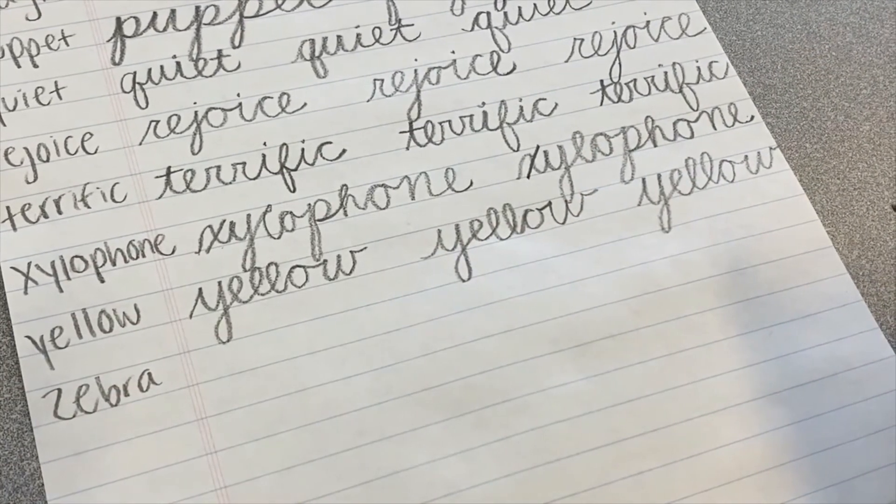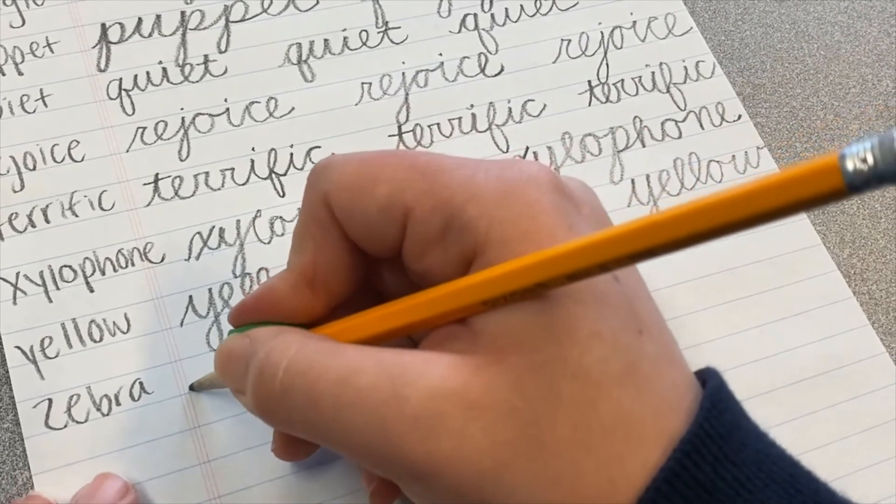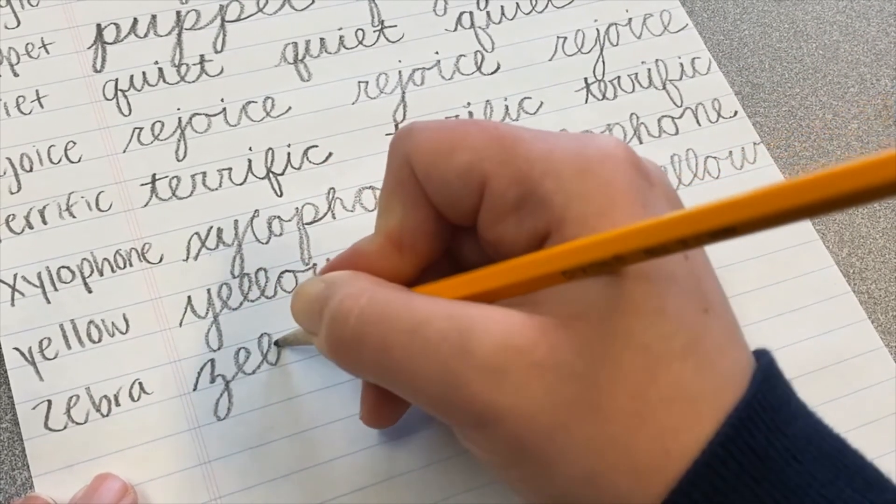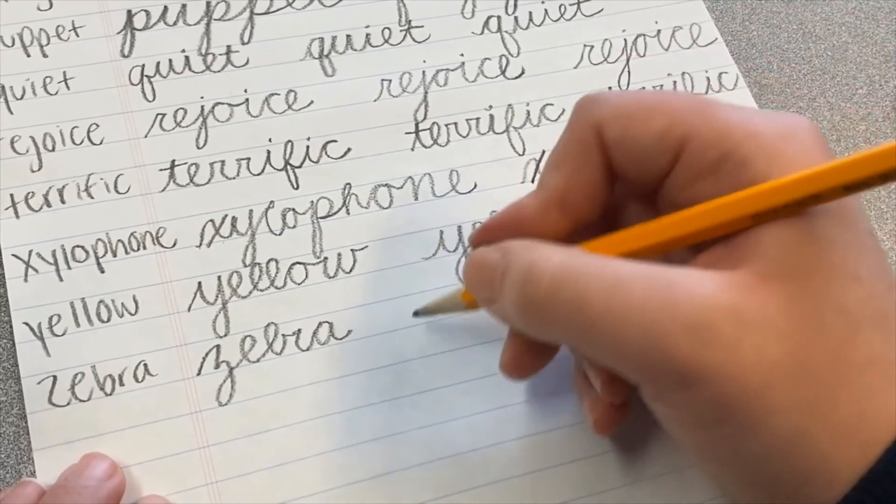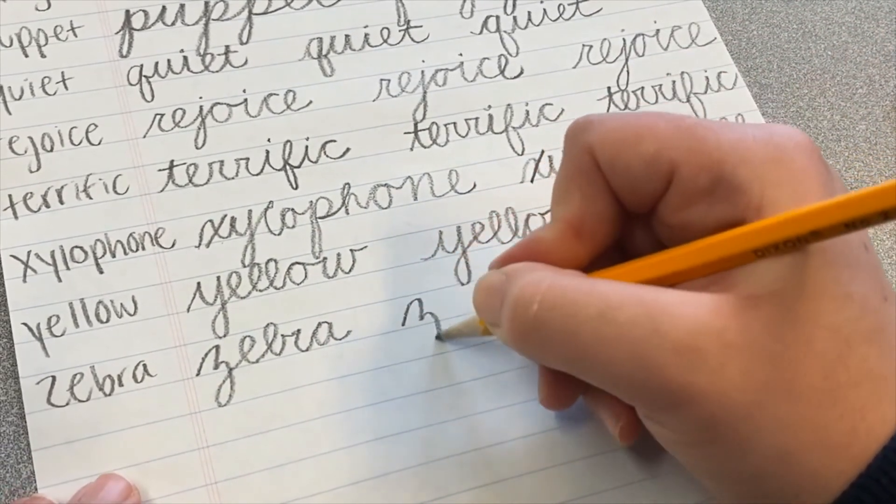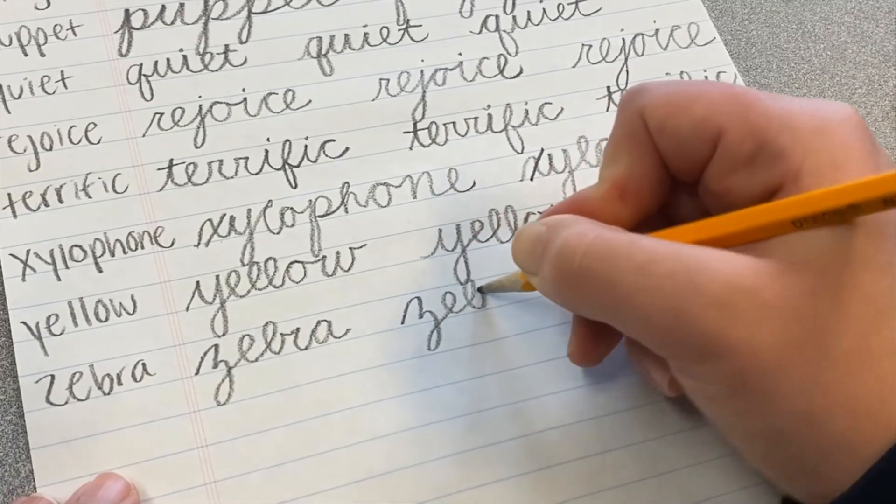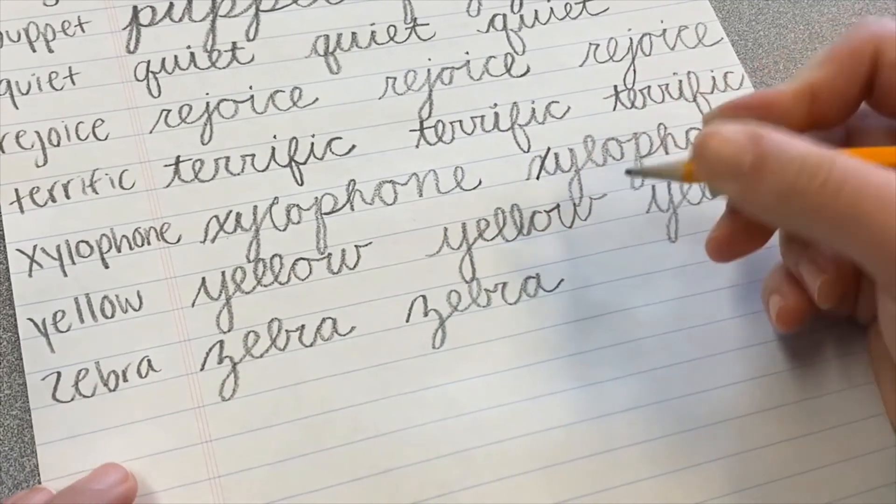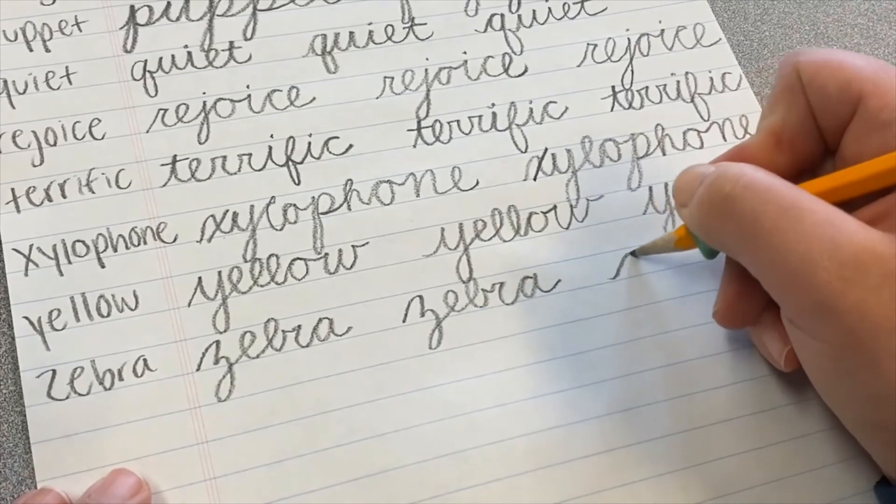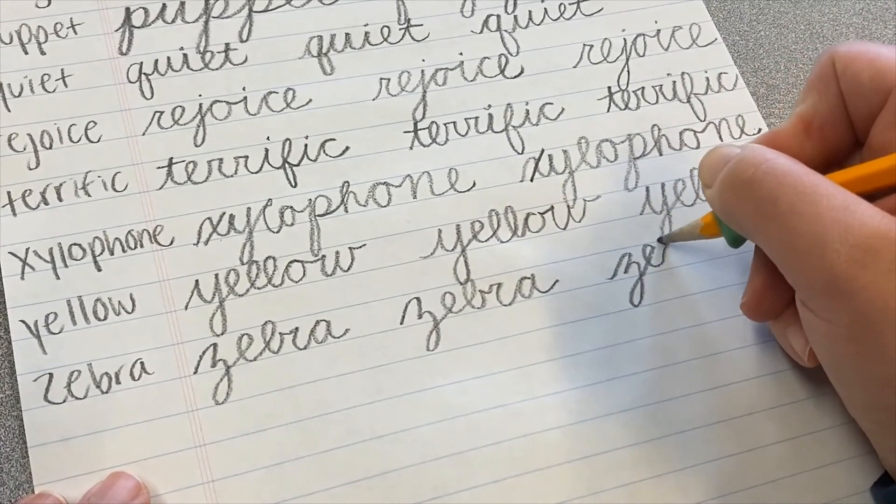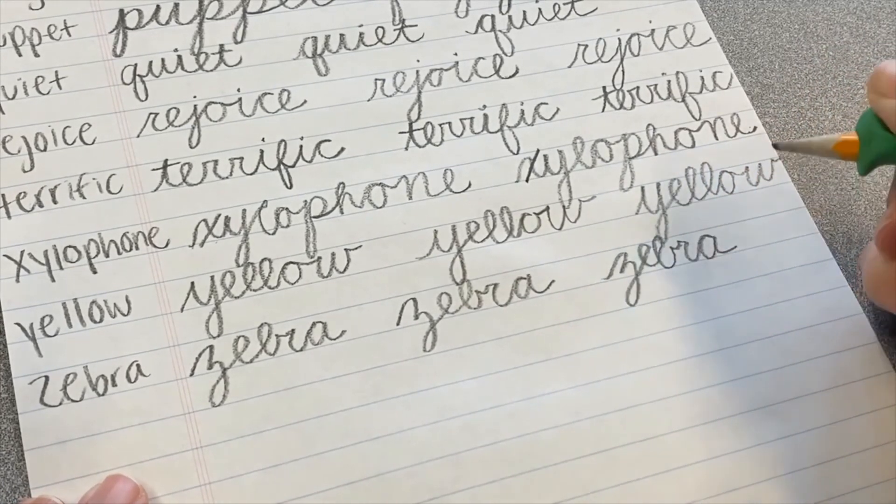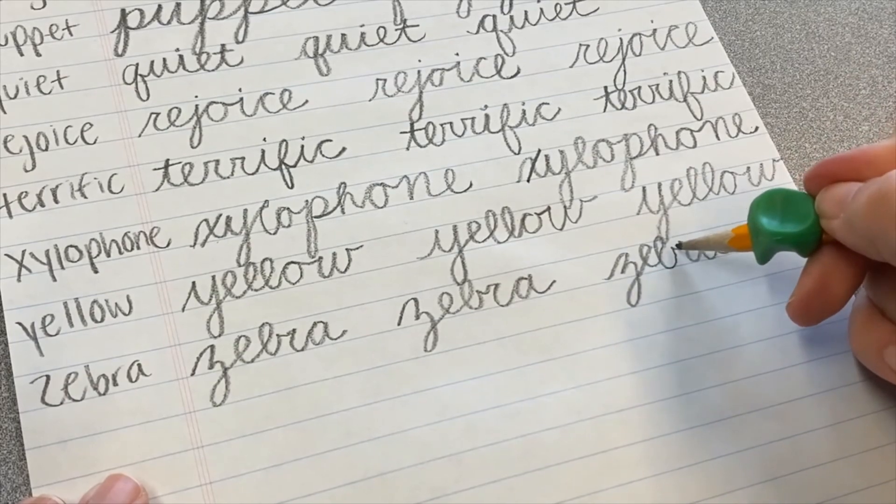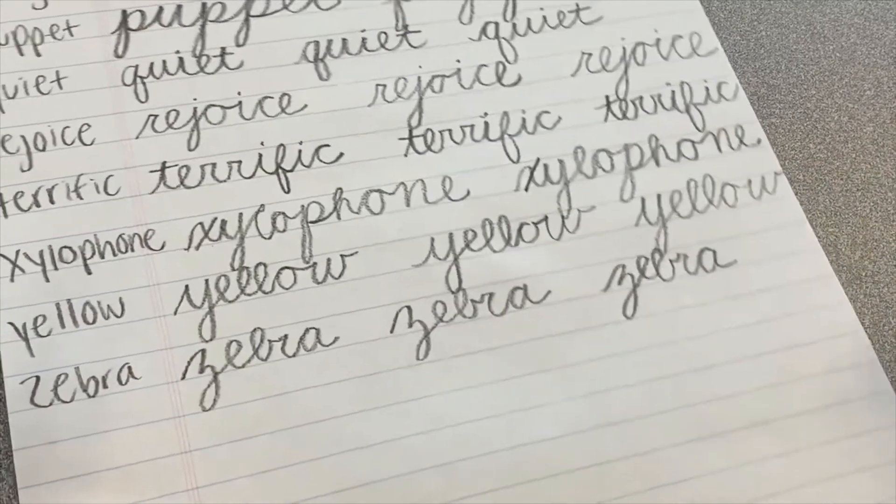We are on to our last word. It's the word zebra. Z, E, B, R, A. Remember that Z looks kind of like a three. And then we've got the E and the B, R, A. And so by practicing writing your name in cursive, you're actually practicing signing your name.